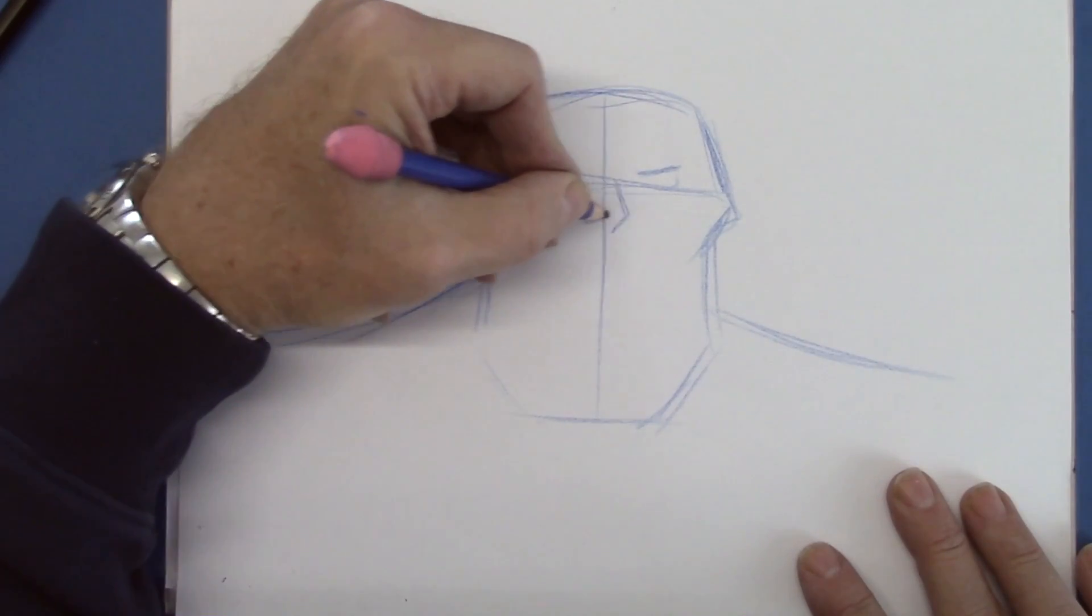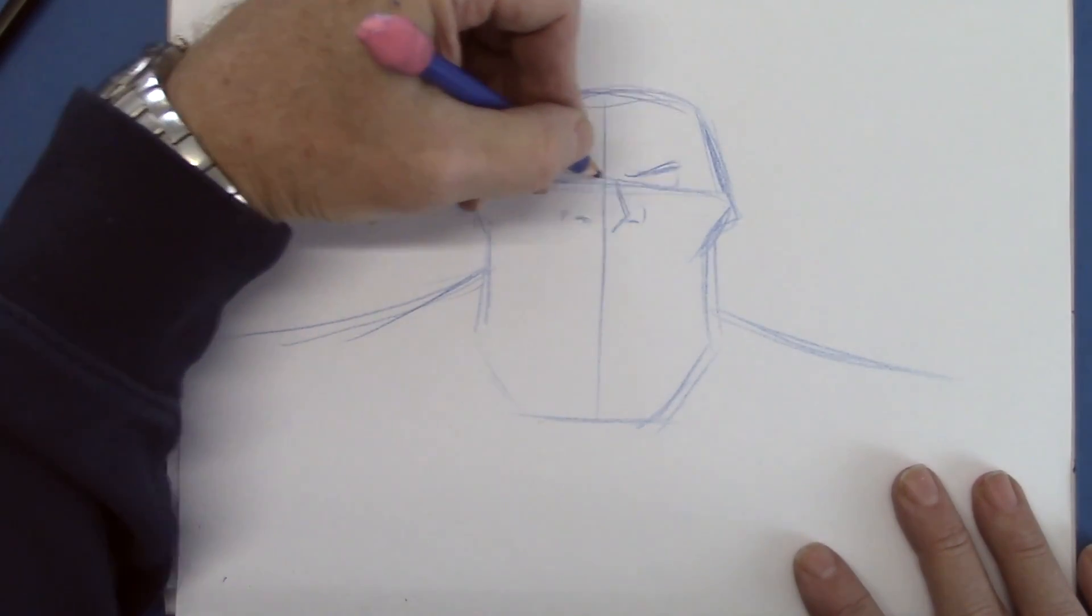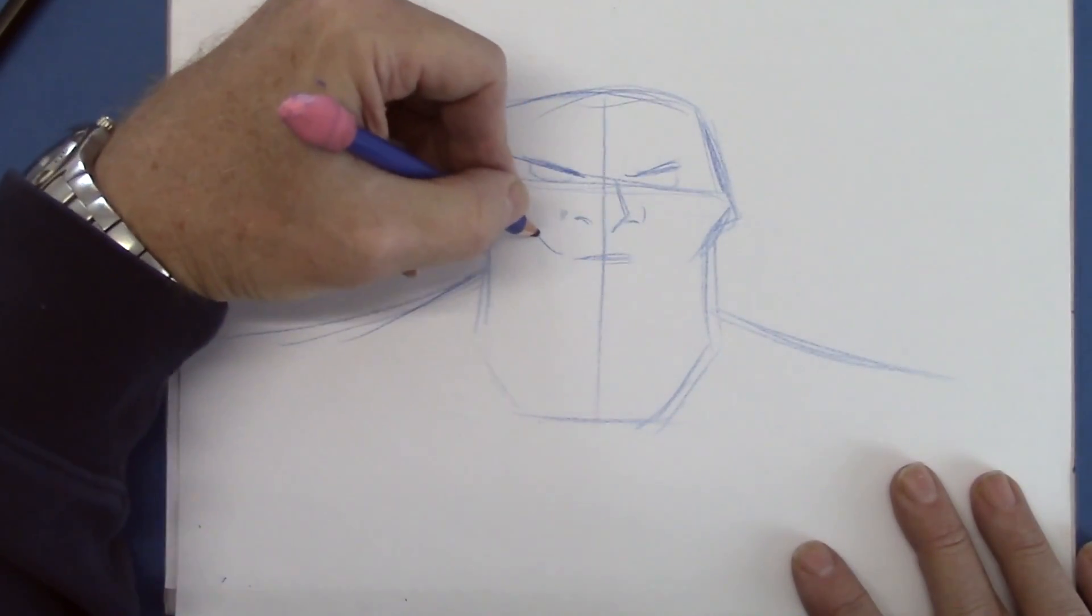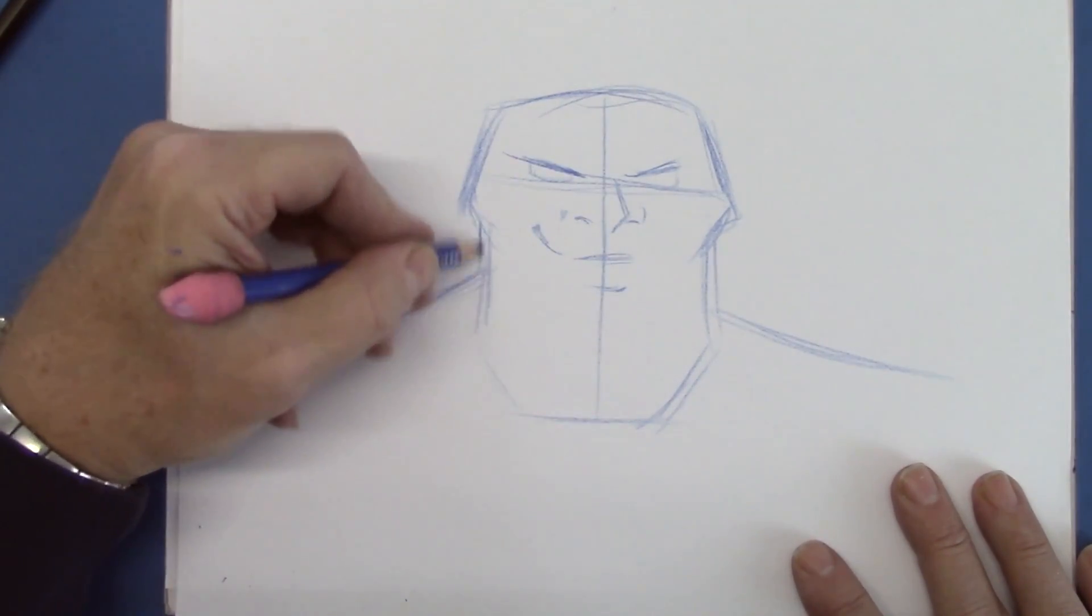And we'll give him flared nostrils and a short nose. And I'll give him a little smile. Just a sweet little smile. That looks not so nice, doesn't it?